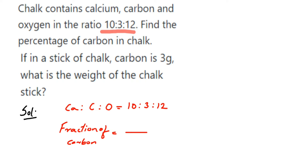10 plus 3 plus 12 gives you 25. Out of 25, how much part is carbon? It is 3. So the fraction of carbon in chalk is 3/25 — out of 25 parts, 3 parts are carbon. Now I have to find out the percentage.